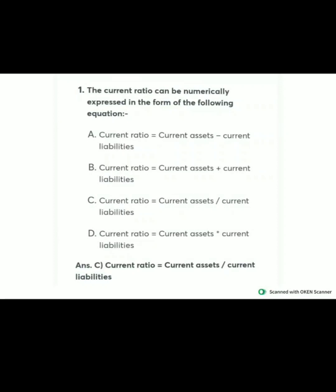The first MCQ relates to the current ratio. The current ratio can be numerically expressed by the following equation. Current ratio is a ratio which explains the relationship between current assets and current liabilities. So here option C is correct: current ratio equals current assets divided by current liabilities.